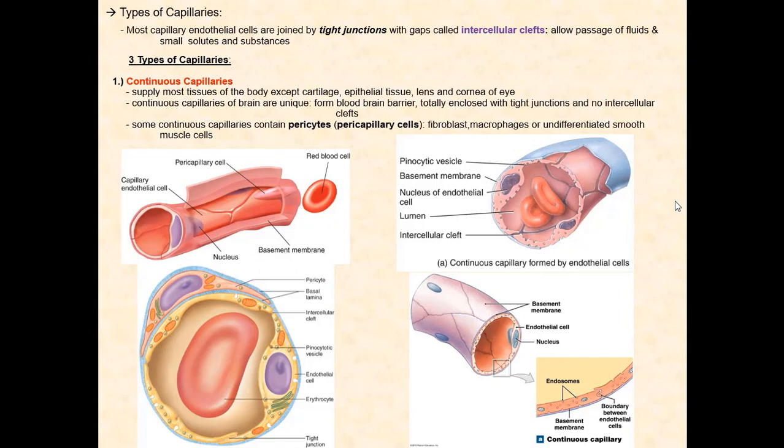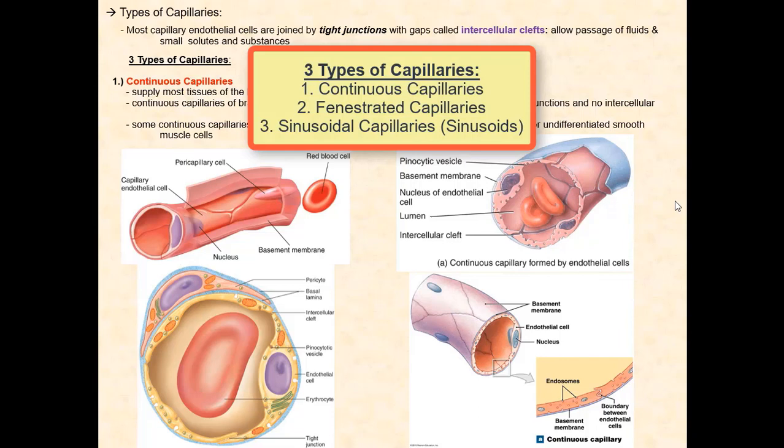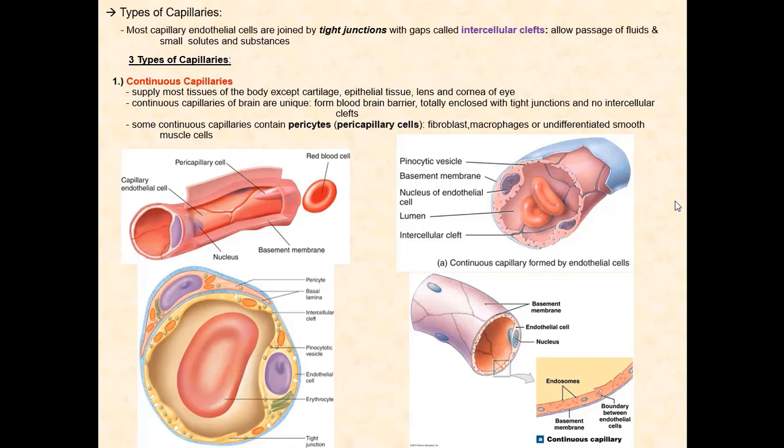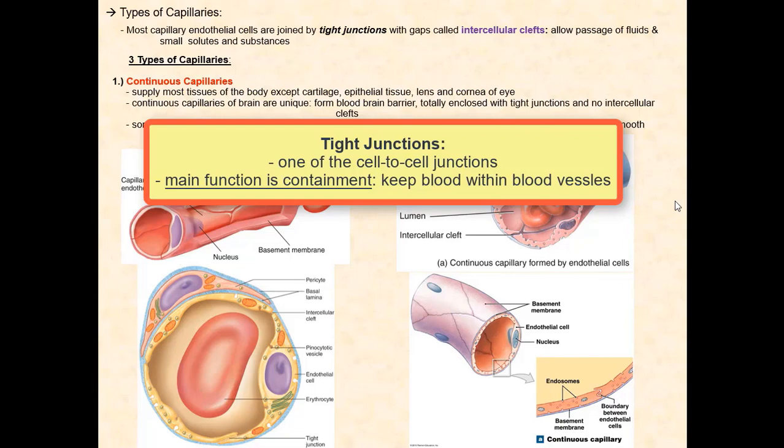Let us now discuss the different types of capillaries. We have three types: continuous capillaries, fenestrated capillaries, and sinusoidal capillaries, or simply sinusoids. Depending on the function of the organ or tissue will determine the appropriate type of capillaries they will have. Despite their apparent differences, they all only have a tunica intima, or interna, composed of endothelium anchored to a basement membrane, and tight junctions between these endothelial cells.